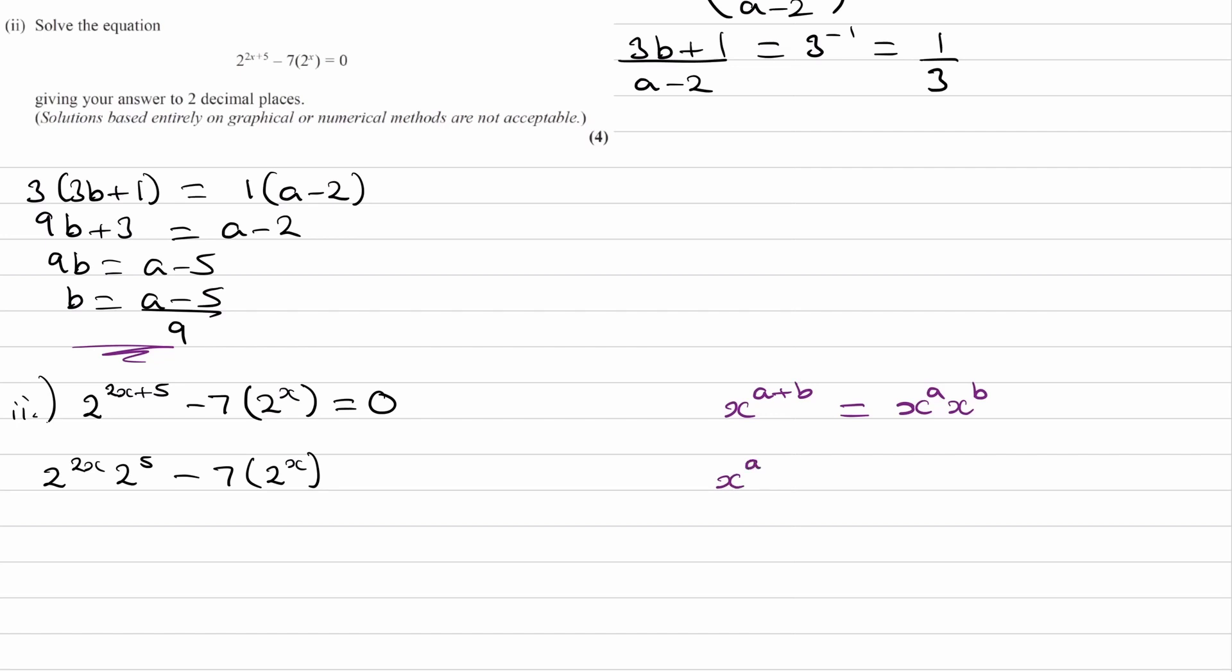If we have x to the power of a to the power of b, this is the same thing as x to the power of ab. Which then, if a and b are multiplied together, it doesn't matter what order they're in, we could also write this as x to the power of b all to the power of a.